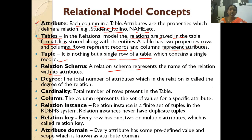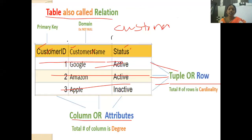Next is degree. The degree of a relation is the total number of attributes present in the relation — that is, how many columns the table has. In our example customer table, we have three columns: customer ID, customer name, and status. So the degree of this relation is 3.